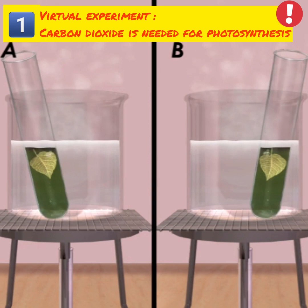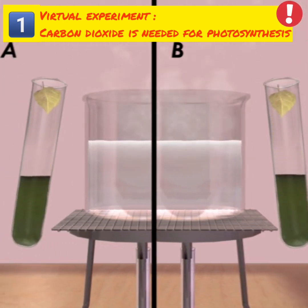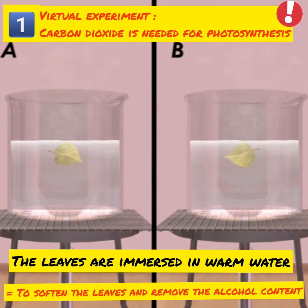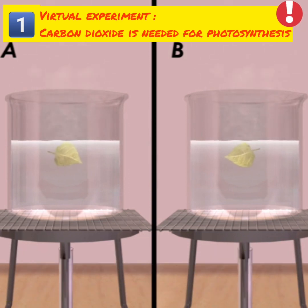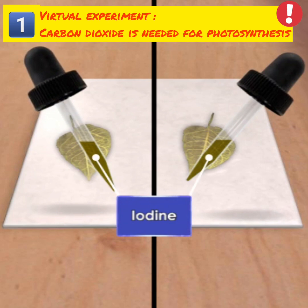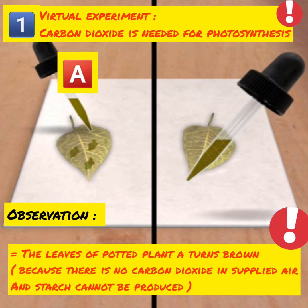Once the leaves are decolorized, remove both leaves and put them into warm water to soften the leaves and remove the alcohol content. Remove the leaves and spread them onto a white tile.